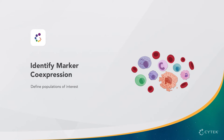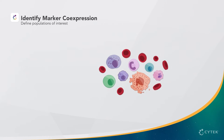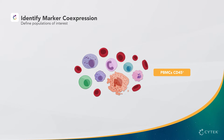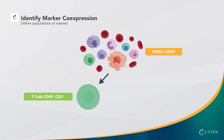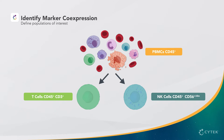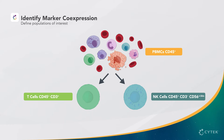Now let's take a closer look at our populations of interest to understand marker coexpression. We can make some assumptions regarding coexpression summarized here in our cell lineage tree. This diagram can help us understand coexpression between markers in the panel. T cells will be defined by CD3, which will be coexpressed with all other T cell markers. Our NK cells will be defined by CD56 expression. Because the NK cells will not express CD3, we don't have to worry about its coexpression with any NK exclusive markers, and the same is true for CD56 and the T cell exclusive markers.